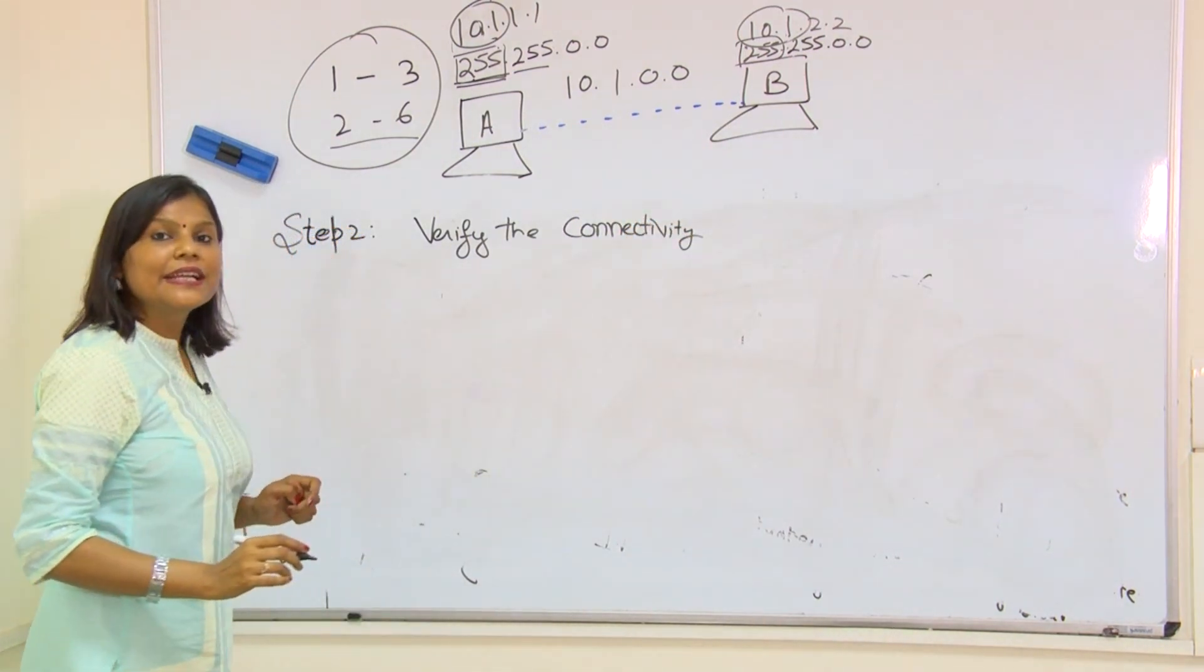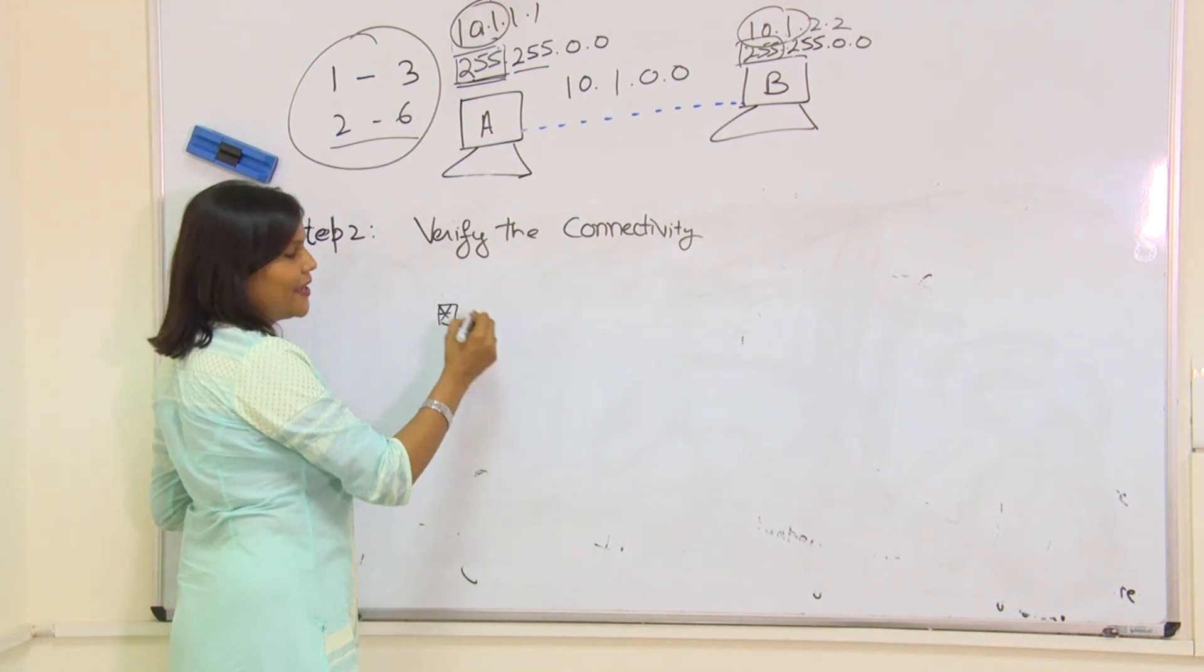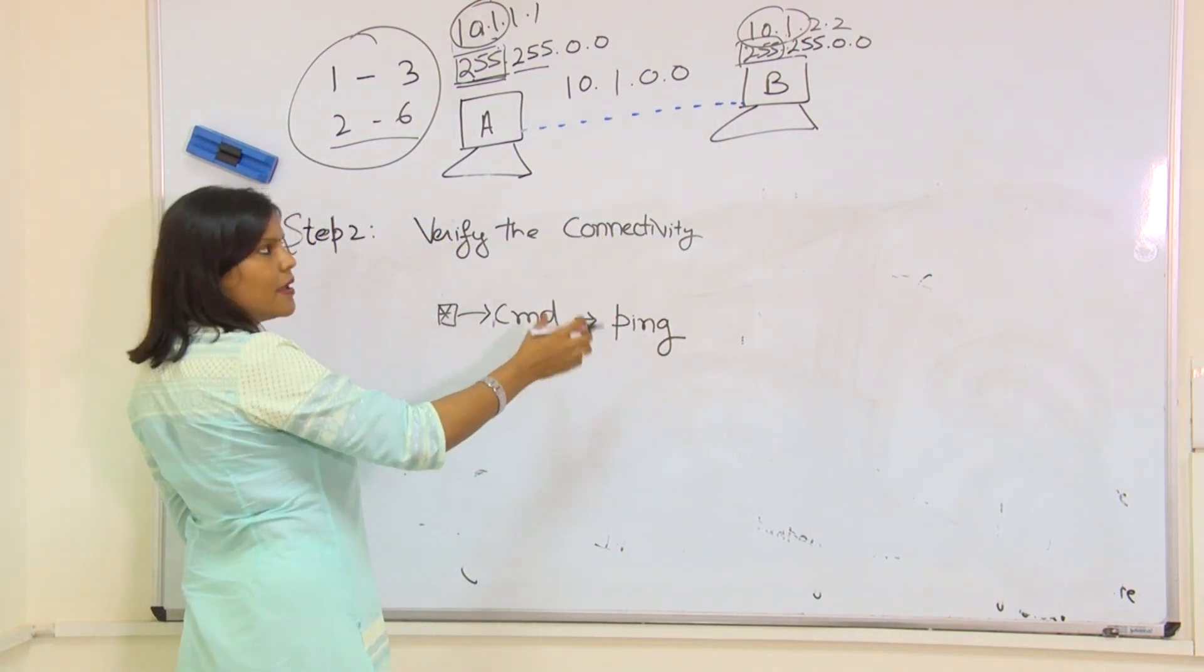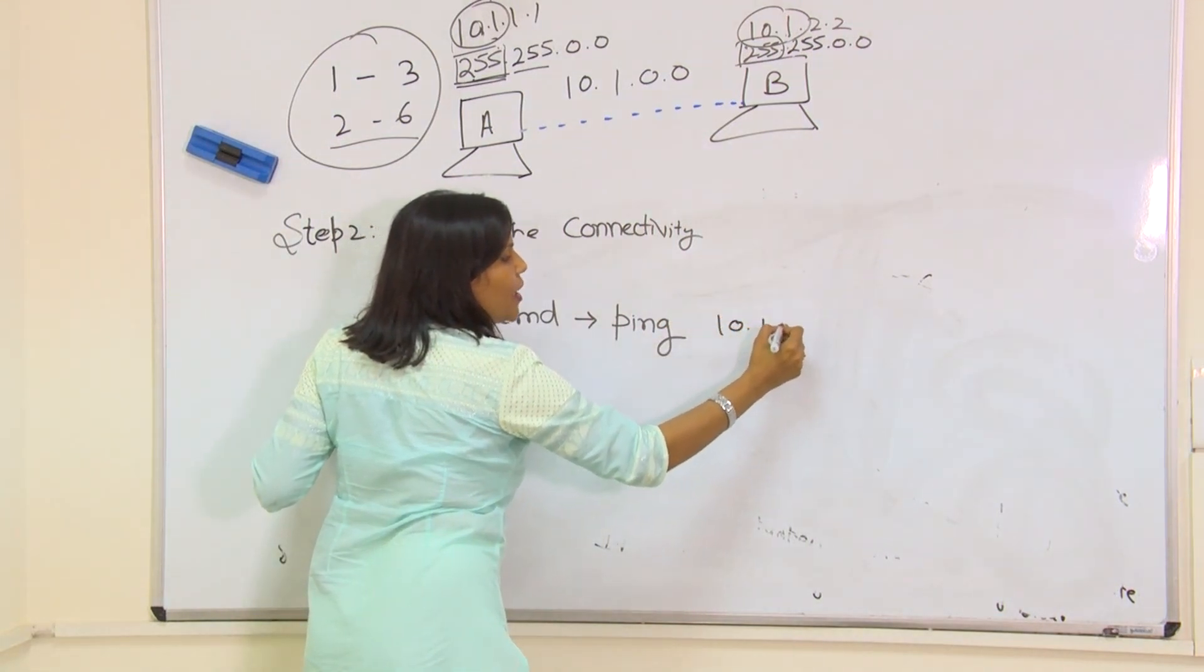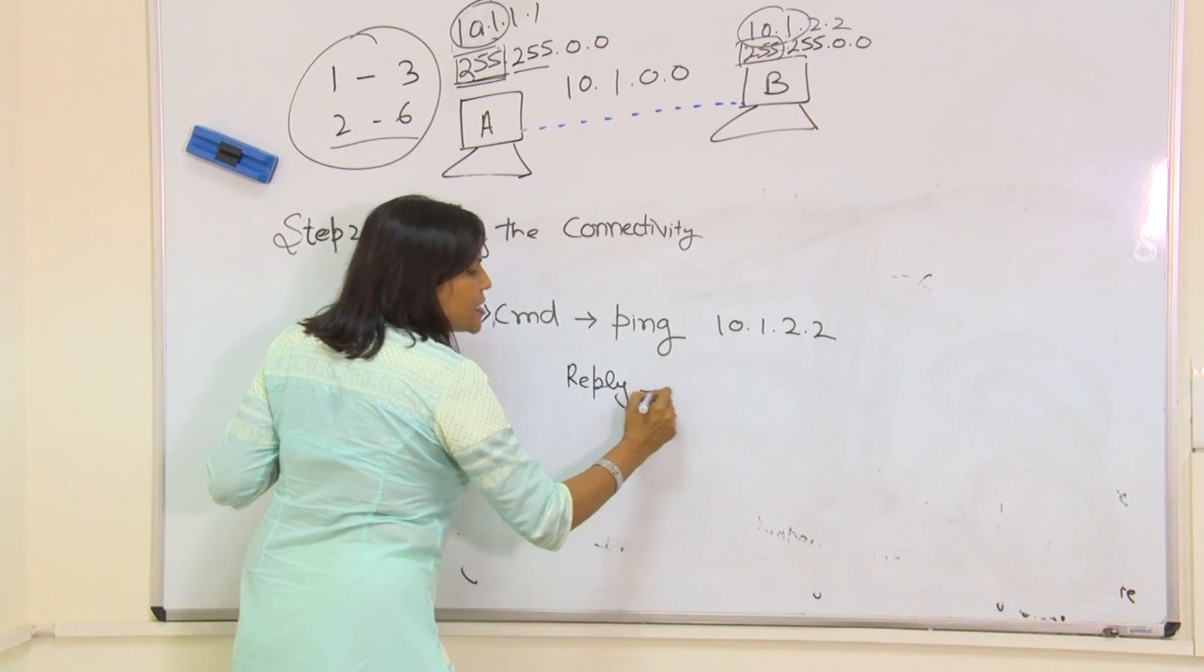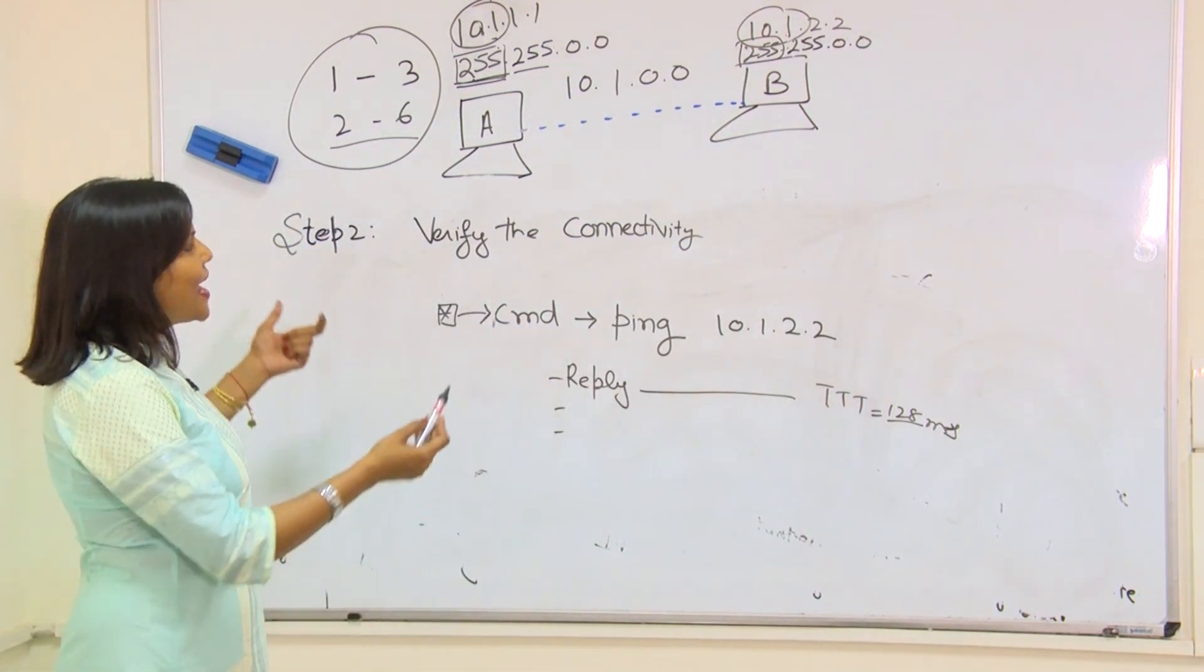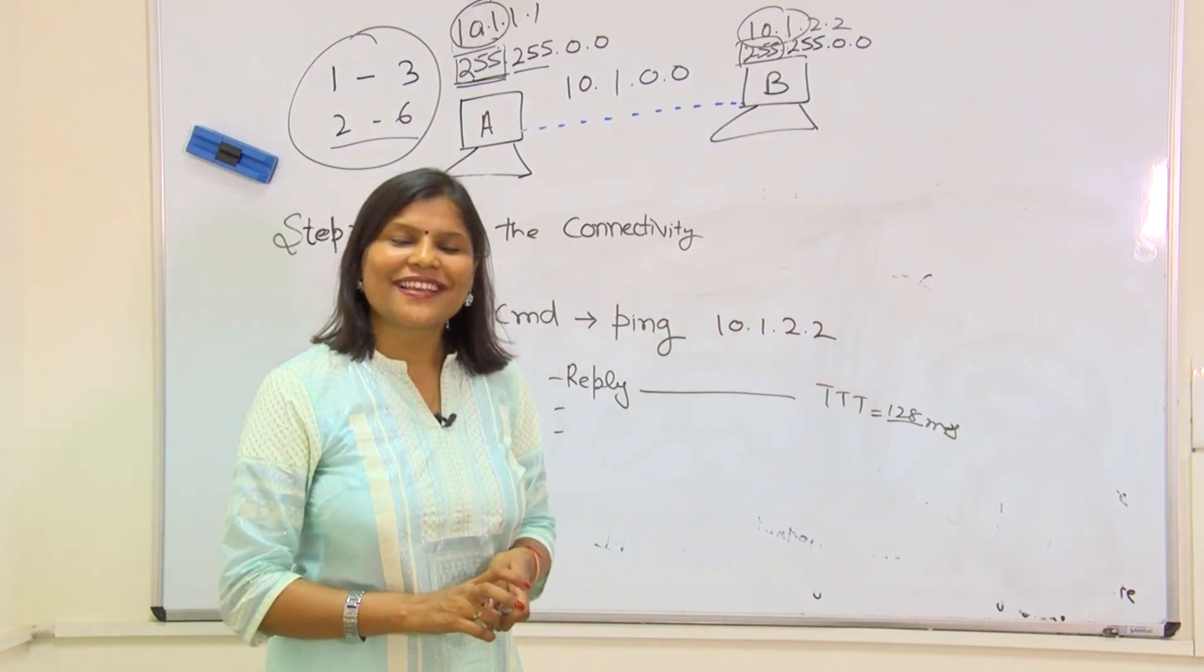To verify the connectivity, first click on the window icon again, type cmd, and go to command prompt. Then write ping. If I'm on system A, I will write ping and then the IP address of the neighboring system, that is 10.1.2.2. If I get the reply messages with proper TTL - normally it comes with 128 ms - if I'm getting replies here, that means I'm done with my basic structure of the first experiment of computer networks. Thank you for listening.